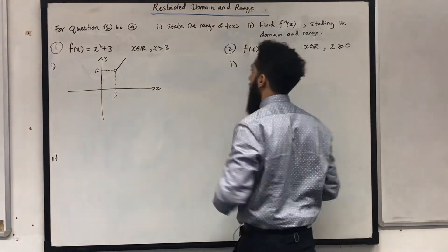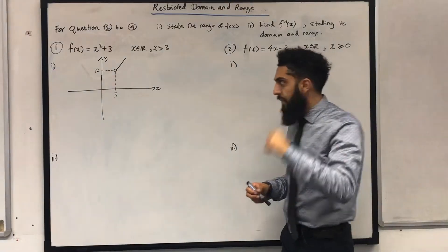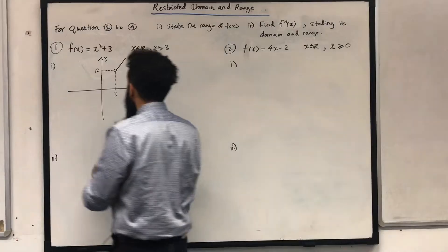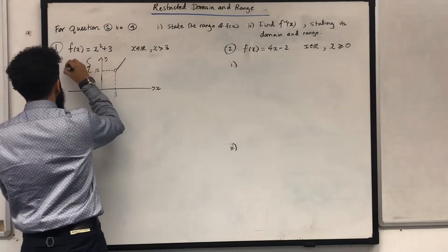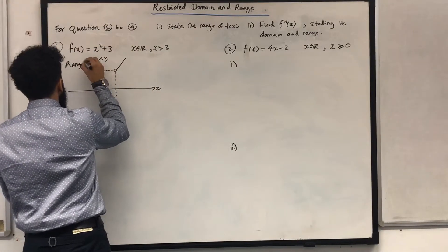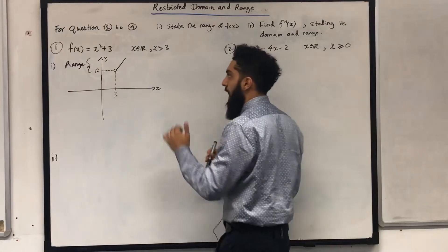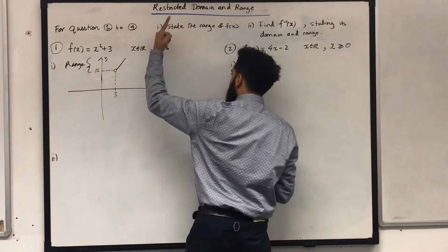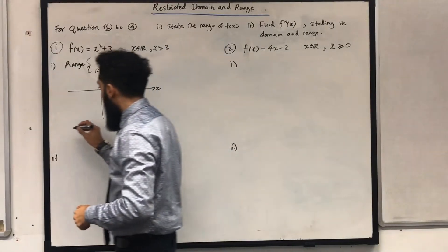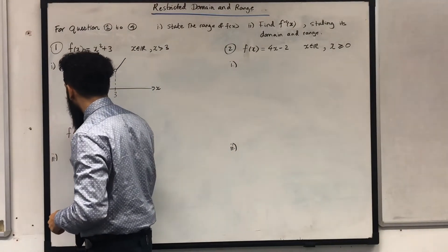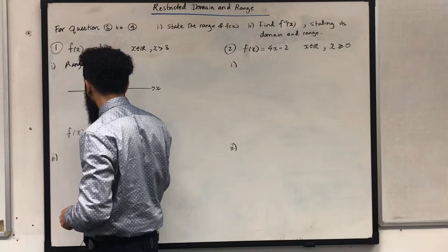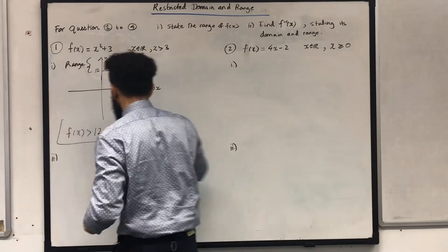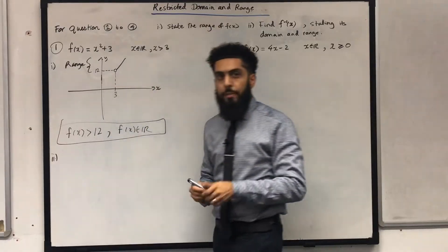That is my graph for f of x equals x squared plus 3, x is a real number, restriction x is greater than 3. To find the range of f of x, I need to focus on the y-axis. I can see that f of x can be more than 12, because the curve goes to positive infinity. So the range is f of x is greater than 12, f of x is a real number.